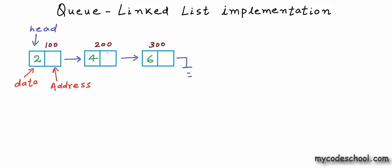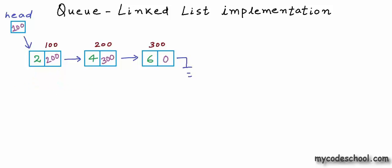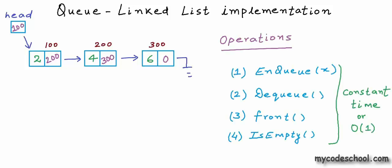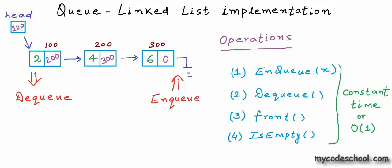Assuming nodes are at addresses 100, 200, and 300 respectively, the identity of a linked list that we always keep is the address of the head node, stored in a pointer variable called head. Now we want to use a linked list to implement a queue. We can pick one side for insertion (enqueue) and the other side for dequeue. The requirement is that these operations must take constant time — O(1).